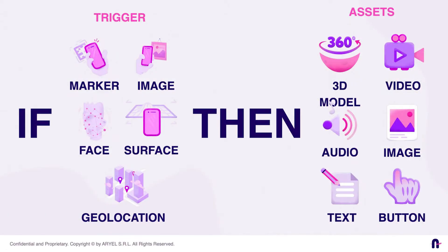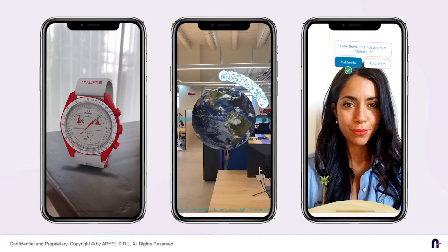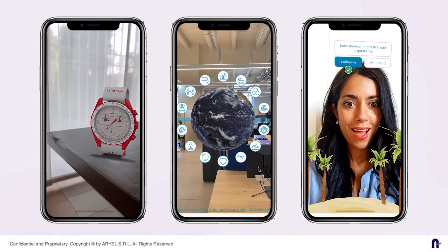The process underneath it can be represented as an if-then sentence: a digital asset will be shown when the trigger we set is scanned by our camera. The trigger may be a particular picture, a human face, a surface, and even more. The result will look something like this.